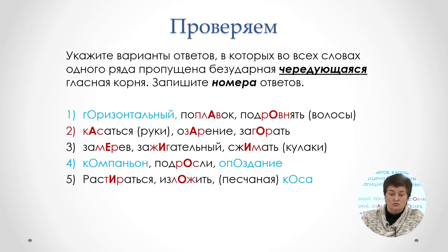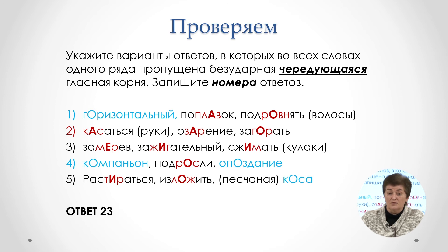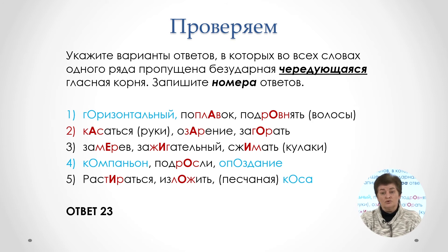Обязательно проверим, что у нас получилось. Итак, первый, третий и пятый ряд не могут быть ответом, поскольку не все слова данного ряда включают безударную чередующуюся гласную в корне. Получаем ответ «2» и «3» и зарабатываем гарантированный балл. Обращаю внимание: при работе с чередующейся гласной необходима таблица. Систематическое обращение к ней позволяет запомнить 21 корень и усвоить правила правописания данных слов.